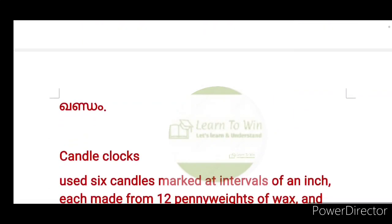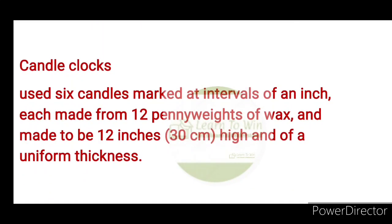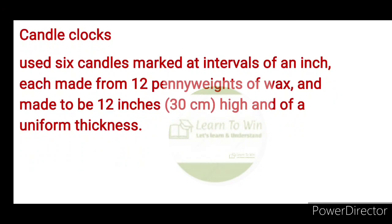Next is the candle clock. The candle clock is marked at intervals of an inch, each made from twelve penny-weight of wax, and made to be twelve inches high and of uniform thickness. Six candles are made at the height of 12 inches, which equals 30 cm. One inch is burned at a time.